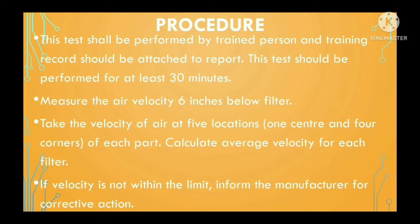Next, we will see the procedure for air velocity check. Step one: this test shall be performed by a trained person and the training record should be attached to the report. This test should be performed for at least 30 minutes. Step two: measure the velocity above the area, and it should be measured at six inches below the filter face.